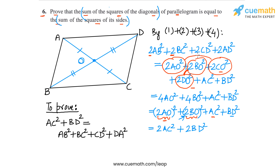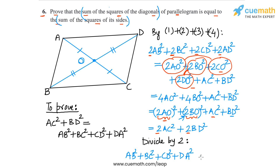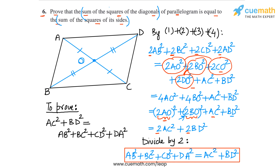We now have 2·AB² + 2·BC² + 2·CD² + 2·DA² = 2·AC² + 2·BD². Dividing both sides by 2, we get AB² + BC² + CD² + DA² = AC² + BD². On the left side we have the sum of squares of the four sides, and on the right side the sum of squares of the diagonals. This is exactly what we had to prove, completing question 6.